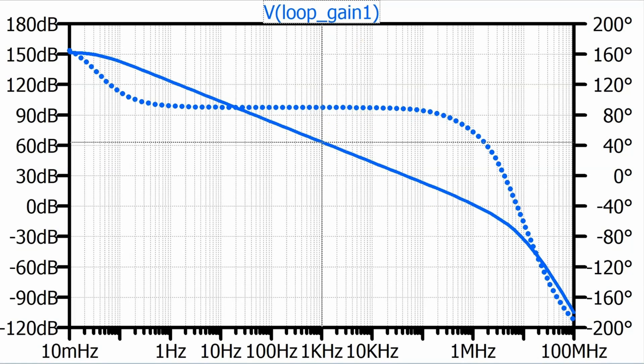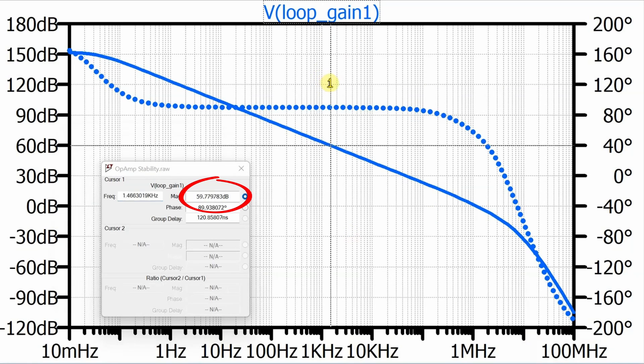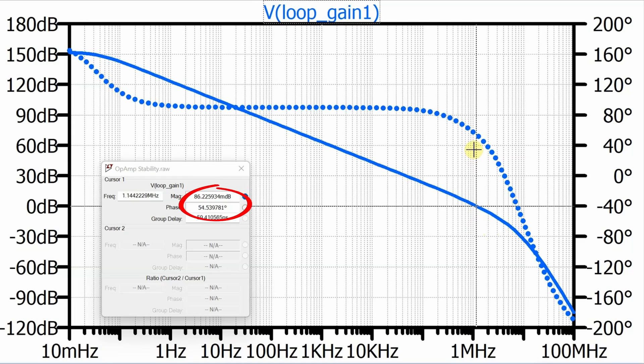So again, let's bring up the cursors, drag the cursor over until we see the magnitude at zero, zero dB, which is right around there. And we can see that the phase angle is 54.5 degrees there, which means we have 54.5 more degrees until we get down to a full phase shift of 180 degrees when compared to DC. So the phase margin for our circuit is 54.5 degrees.